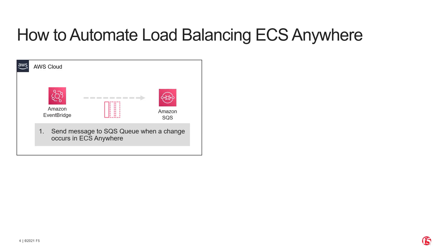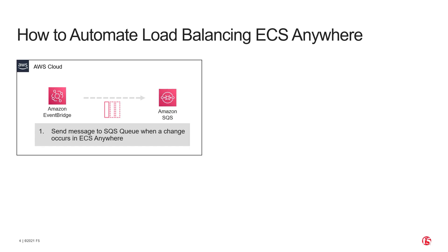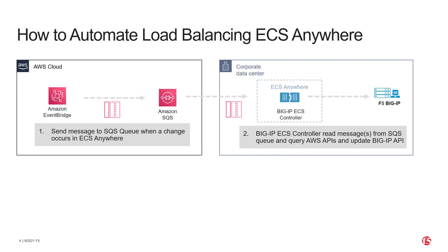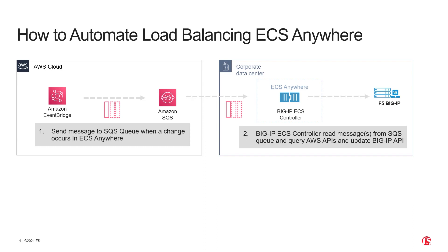To build our controller, we will make use of multiple AWS services. The first service is AWS EventBridge, which we will use to notify us of changes occurring in ECS Anywhere. These changes will send a message to an SQS queue that we will use to check for changes. These changes will be propagated to a controller deployed in ECS Anywhere, which will monitor the AWS APIs for changes in the SQS queue, as well as look for information on the services, tasks, ports, and IPs that we would like to configure our Big IP device with.